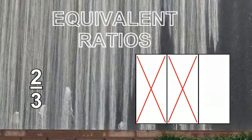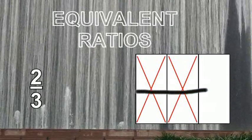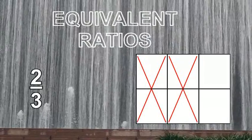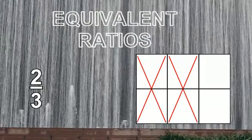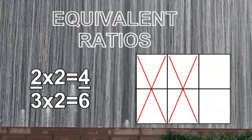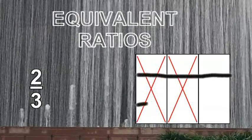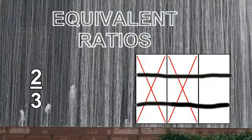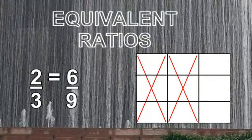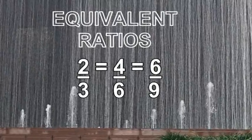How can we make an equivalent ratio of 2 over 3? Let's start by slicing the pieces horizontally in half. Now 2 over 3 has become 4 over 6. Now let's go back to our original ratio of 2 over 3 and slice through the rectangle 2 times horizontally. The 2 thirds has become 6 over 9.